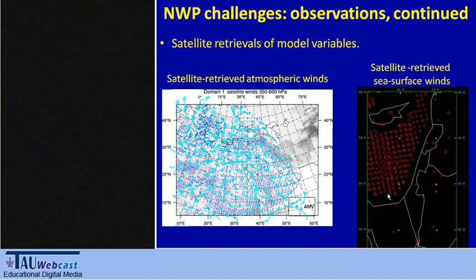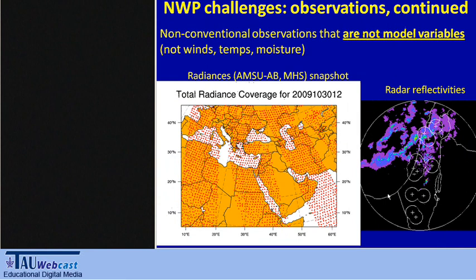We also have coverage of our area with non-conventional observations from satellites. These are not direct model variables like wind, temperature, and moisture, but rather radiances in several wavelengths. We also have radar reflectivity that we can measure on the ground. What we want is a modeling approach that can take advantage not only of mesoscale models and global models, but also of the observations — a piece that has not yet been discussed in this session.